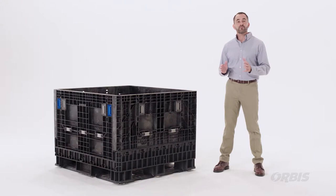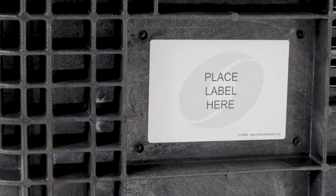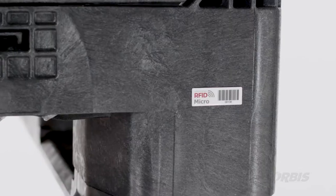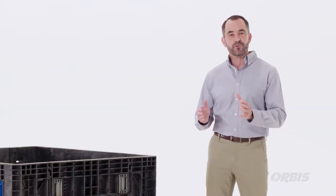Orbis offers many ways to customize your bin for your supply chain needs. This includes card holders, label placards, placard boards, RFID and molded in logos as well as various colors and door configurations.